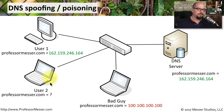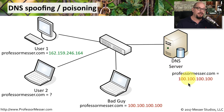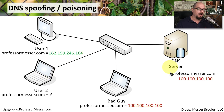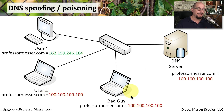Before the second user is able to make the same request, the bad guy takes control of the DNS server and changes the ProfessorMesser.com address to point to a completely different IP address. Now each subsequent user querying the DNS server will still get a response for ProfessorMesser.com, but it will contain a completely incorrect IP address. The bad guy now has control of where people go every time they type in ProfessorMesser.com.